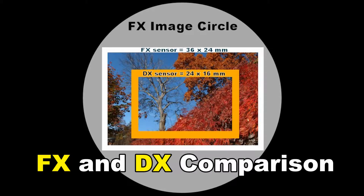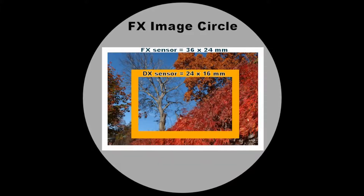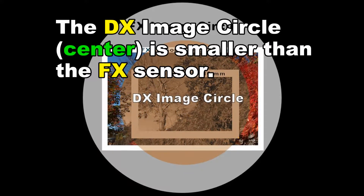Here we compare the relative sizes of the FX and DX image sensors. The image circle is the light projected by the round lens. The DX image circle shown at the center is smaller than the actual FX image sensor.